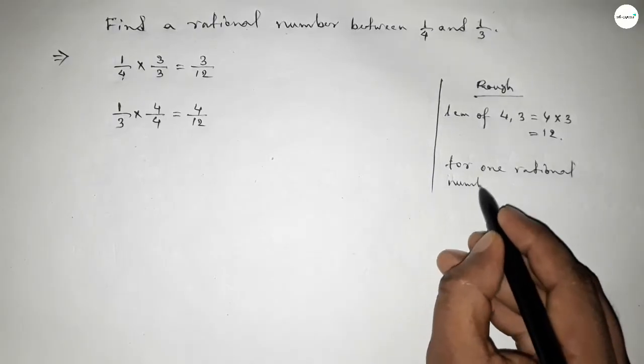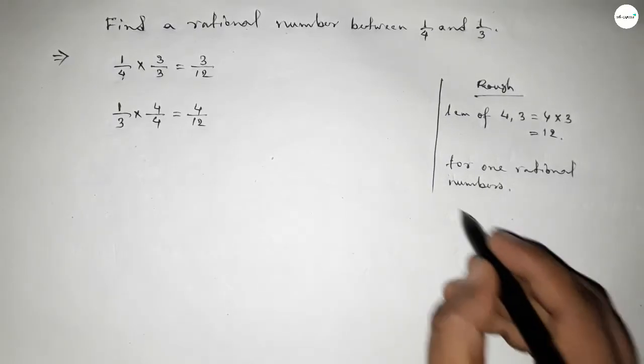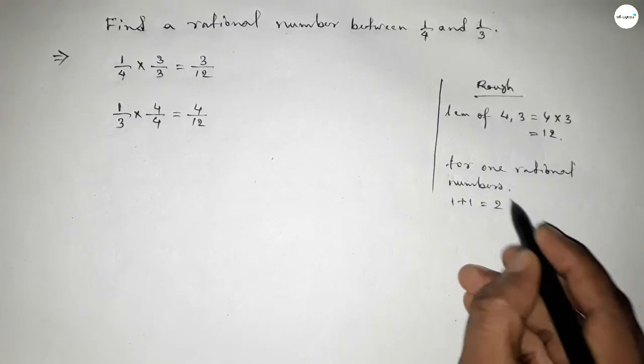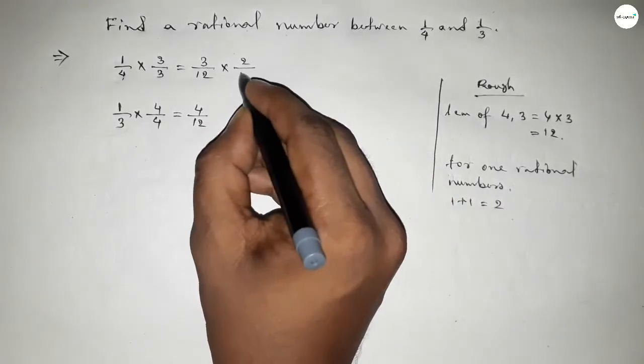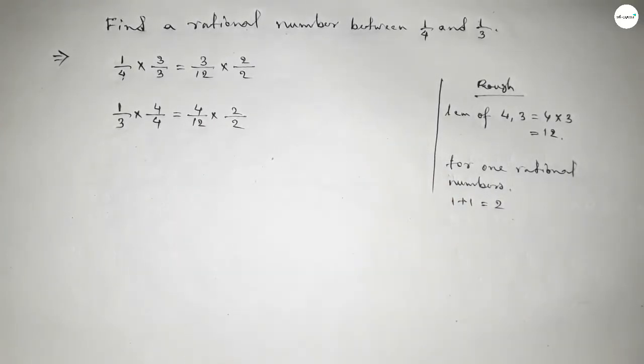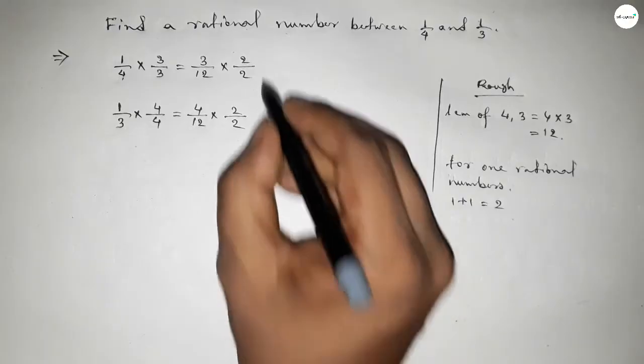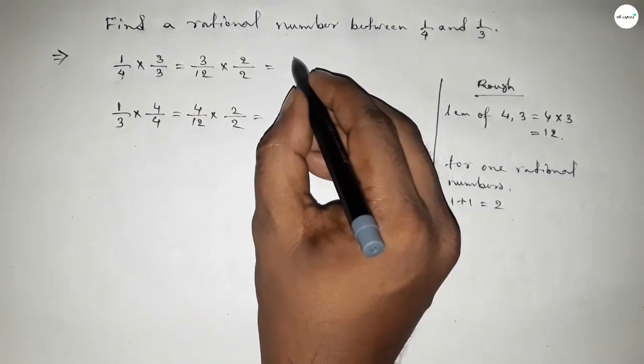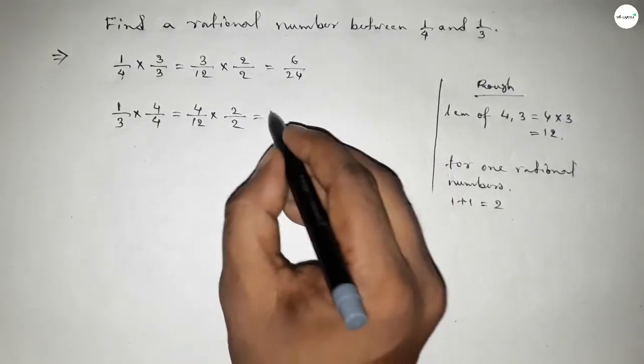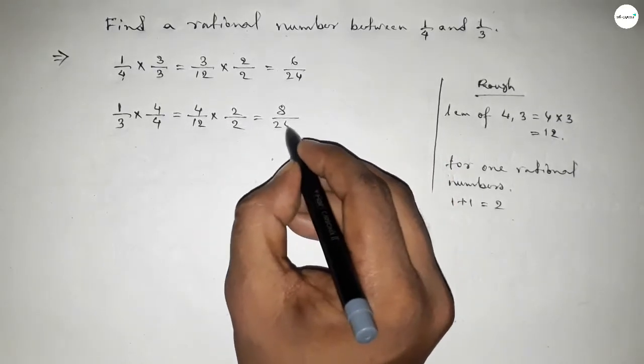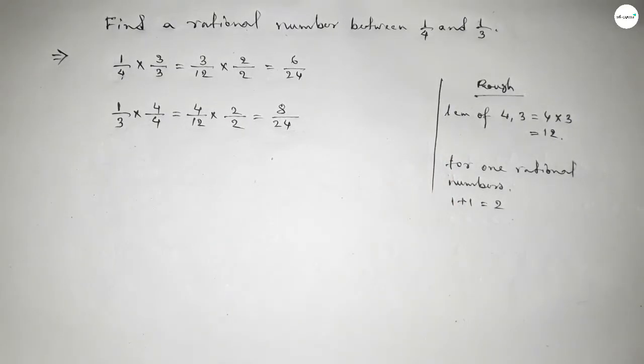We should multiply both numbers by 1 plus 1 equal to 2. By this way, this is 6 over 24 and this is 8 over 24. Now between 6 to 8 we can get one natural number, 7.